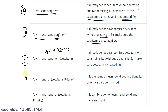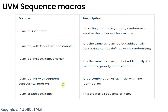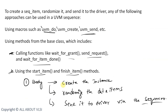These are the available macros which we can use for performing these three operations — create, randomize, and send — inside the body task. A sequence macro call is not recommended because it takes more time to execute on the simulator, resulting in slow simulation. If simulation time is not a concern, you can use these macros.